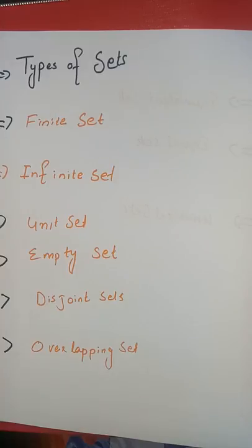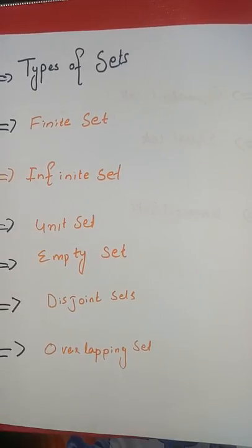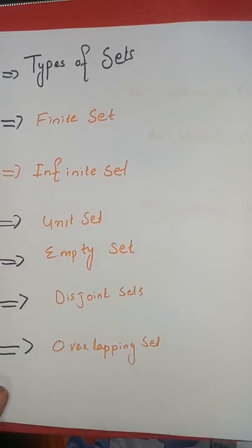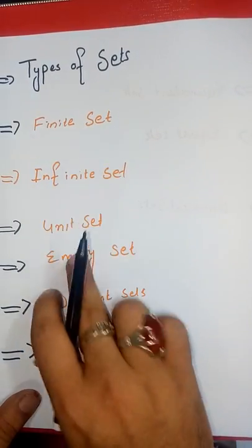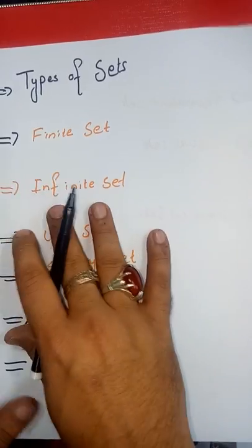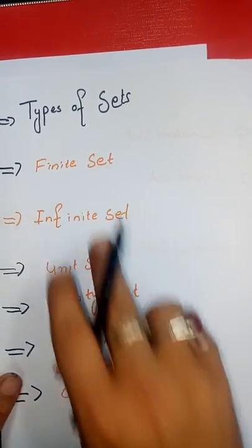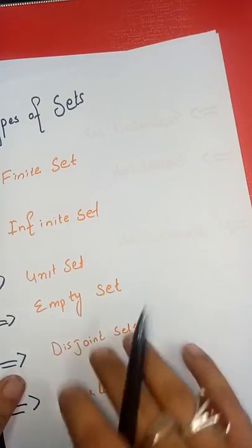Let me give you the recap. We covered three types of sets: tabular, descriptive, and set building notation. Now we're going to study the types of sets. Let me tell you: finite, infinite, unit, and empty.